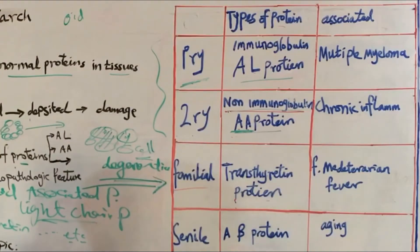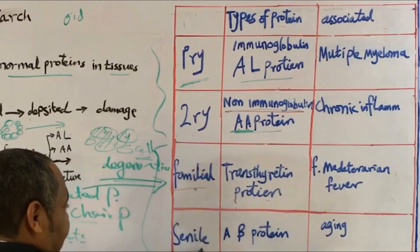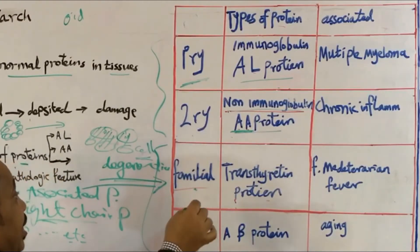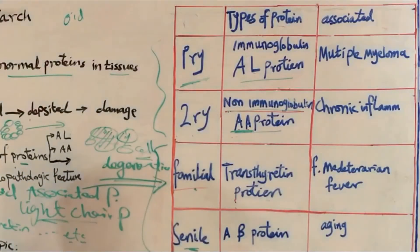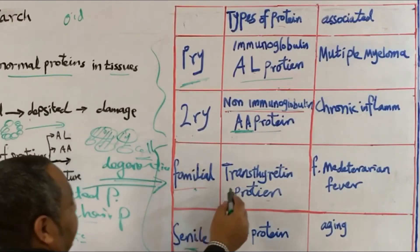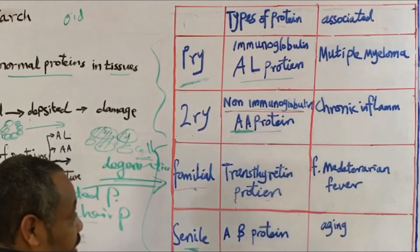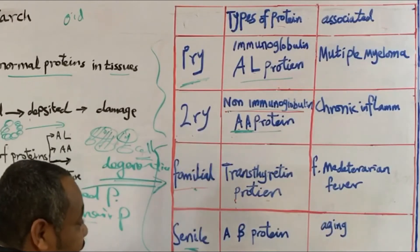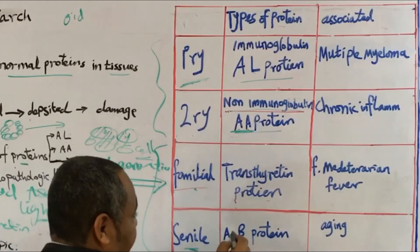The other types which are not common here, as you see, familial type and senile type. And actually here there is abnormal mutated protein. So there is mutation, new mutation, which results in new proteins which fail to fold normally. So it will be misfolded protein. And this is transthyretin in this type, transthyretin protein. And here in the senile one, it's called A-beta protein.